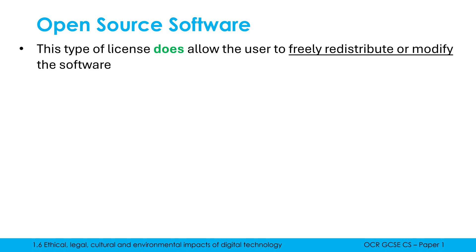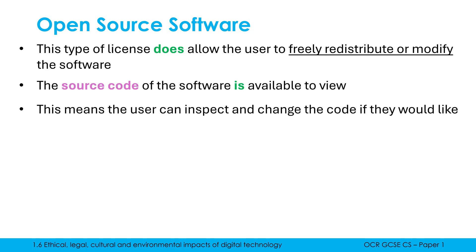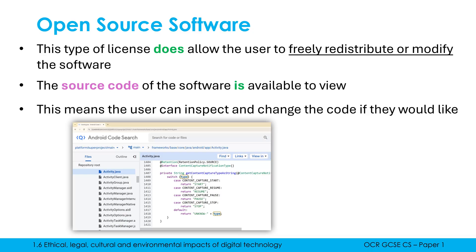Open source software is really the opposite of proprietary. An open source license does allow the user to freely redistribute or modify the software, which means the source code is available to view. Consequently, the user is able to inspect this source code line by line, and equally they are allowed to change it if they would like to. That change wouldn't affect any other user, but they can modify it for their own computer. There aren't as many well-known examples of open source software, but there are lots of smaller ones.